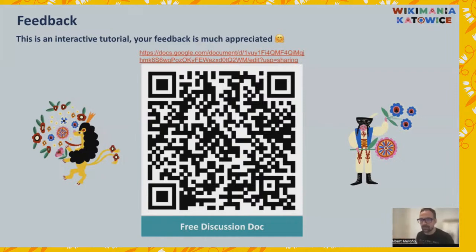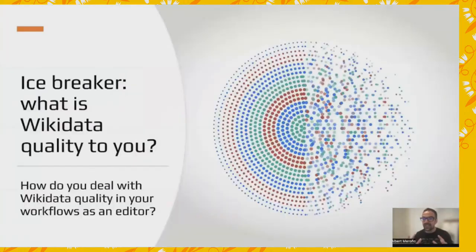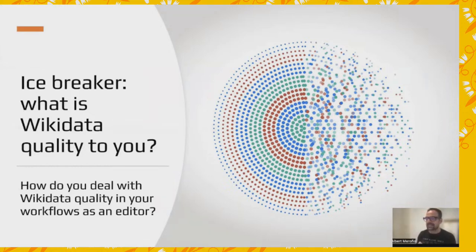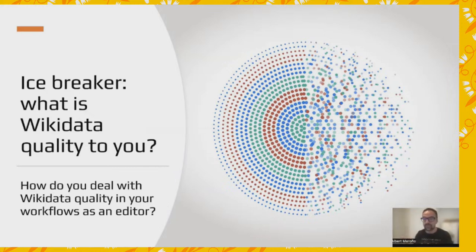So that's the QR code. This is the first interactive part of the tutorial — a question for the entire room: What is Wikidata quality to you? What does Wikidata quality mean to you? And how do you deal with Wikidata quality in your workflows as an editor? In your daily activities of editing, how does Wikidata quality play a role? How do you ensure it, guarantee it, care for it?